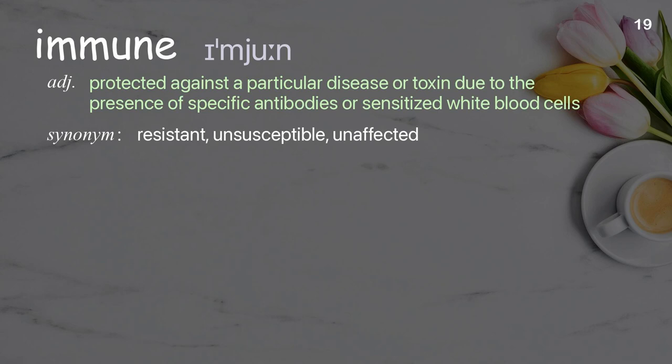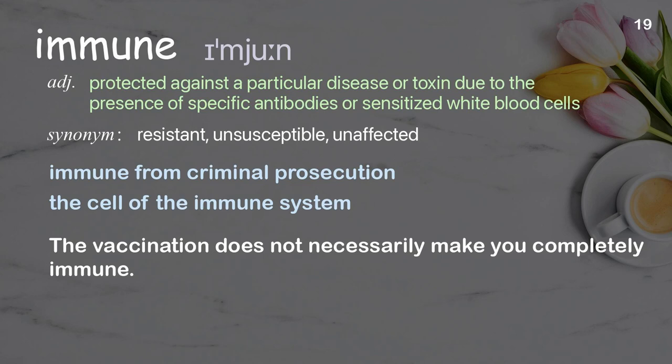Immune: protected against a particular disease or toxin due to the presence of specific antibodies or sensitized white blood cells. Examples: immune from criminal prosecution, the cells of the immune system. The vaccination does not necessarily make you completely immune.